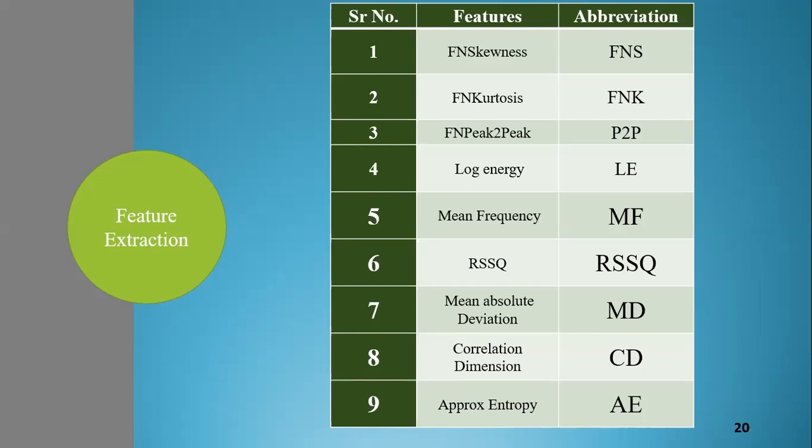Some of these features are: Skewness — asymmetry in a statistical distribution where the curve appears distorted or skewed either to the left or to the right. Kurtosis — a measure of the sharpness of the probability distribution of a real-valued random variable. Peak-to-peak — the difference between the maximum positive and maximum negative amplitudes of a waveform. Mean frequency — calculated as the sum of the product of spectrogram intensity and frequency, divided by the total sum of spectrogram intensity.